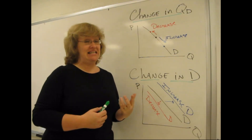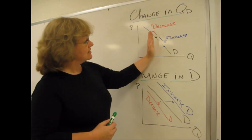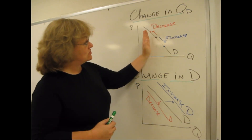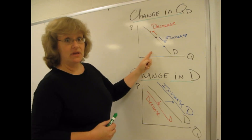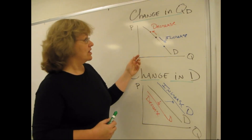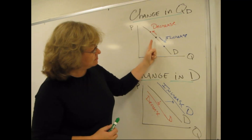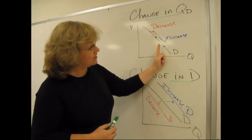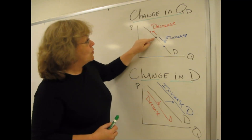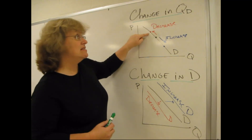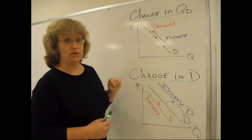One way a lot of people find it easiest to remember is that a decrease is always associated with a decrease in the amount that people want to buy — and it's associated with an increase in price. An increase in quantity demanded is associated with an increase in the amount people want to buy. So going from the black dot to the red is a decrease; going from the black dot to the blue is an increase.